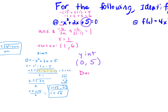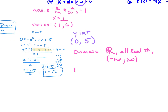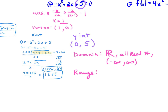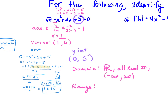What is our domain? All real numbers — it will always be all real numbers. You may see it written that way, or as negative infinity to infinity. For our range, looking at our equation, the coefficient of x squared is negative, so our graph opens down — it's a sad face. Our range goes from negative infinity up to our maximum y value of 6, which comes from the vertex.